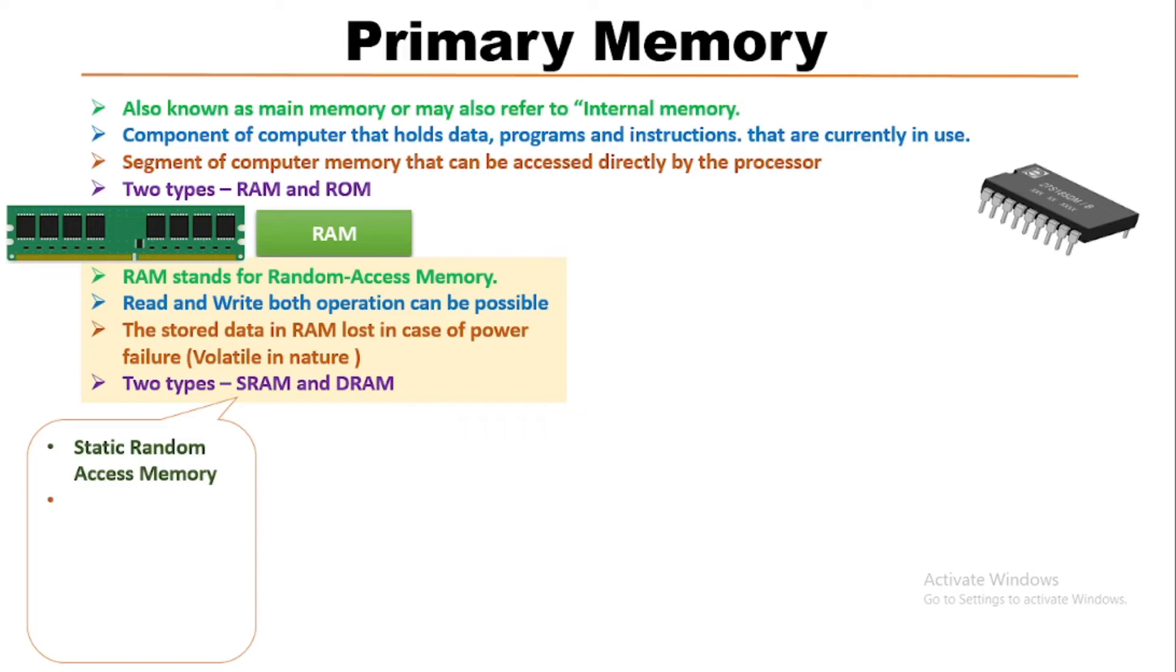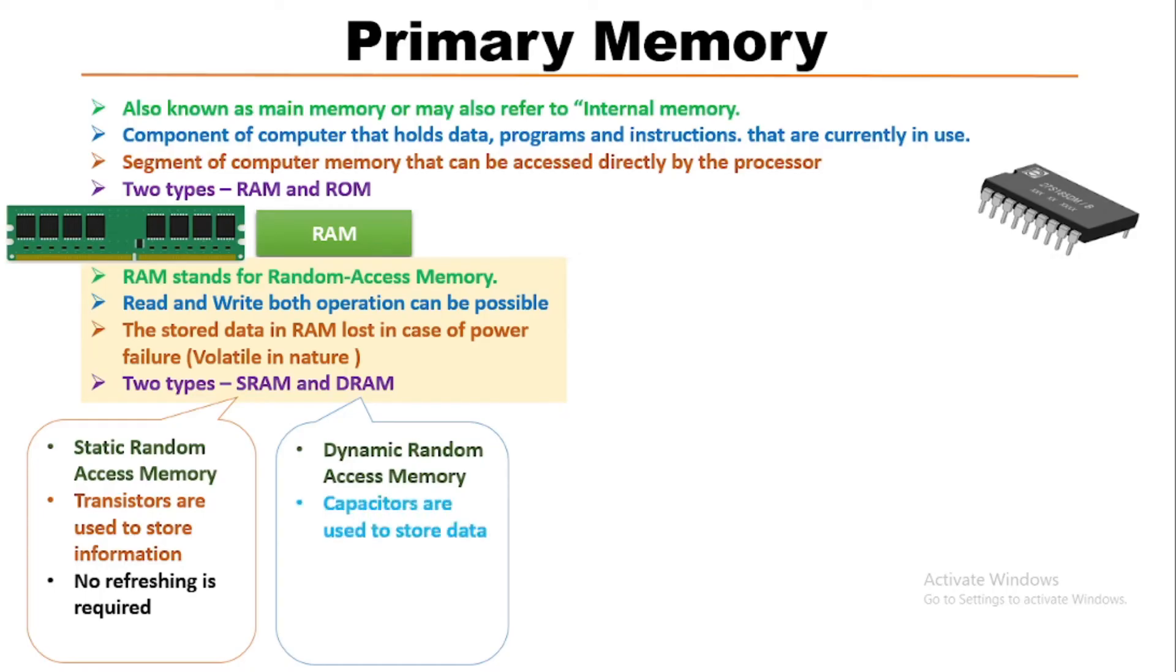For storing information, SRAM mainly uses transistors, and no refreshing is required. DRAM stands for Dynamic Random Access Memory. Here, capacitors are used to store data. DRAM needs to be refreshed periodically. Now, ROM stands for Read-Only Memory.